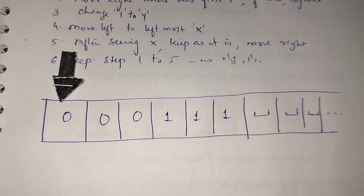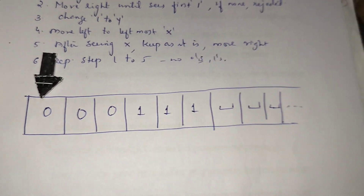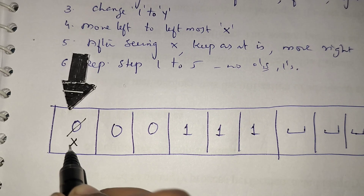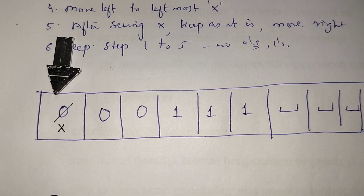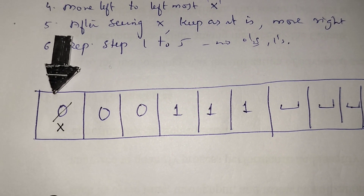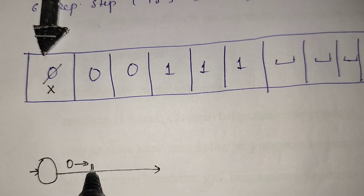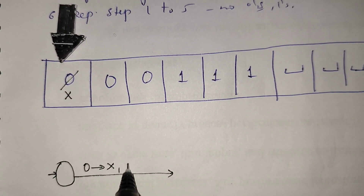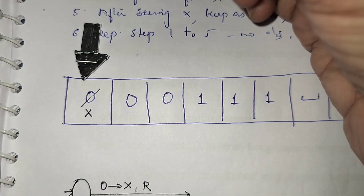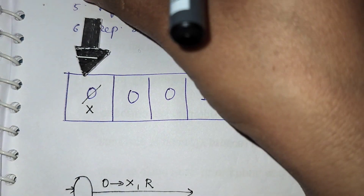The pointer is pointing towards the first 0. Whenever I see the first 0, I need to replace this 0 with x. I am drawing the transition diagram also. Whenever I see a 0, I replace it with x and keep moving towards right. At a time, only one step it will move.